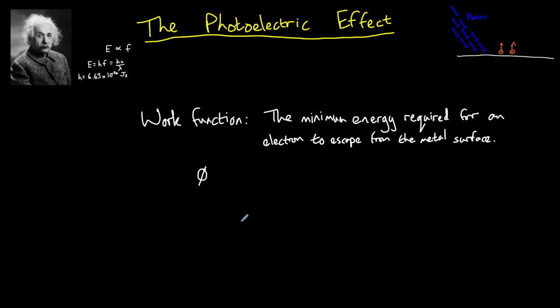Since the excess photon energy is transferred to kinetic energy, we can write Einstein's full photoelectric equation as HF, that is the energy of the photon, is equal to the work function, so the minimum energy needed to release an electron plus the kinetic energy, the maximum kinetic energy, of the emitted electrons.